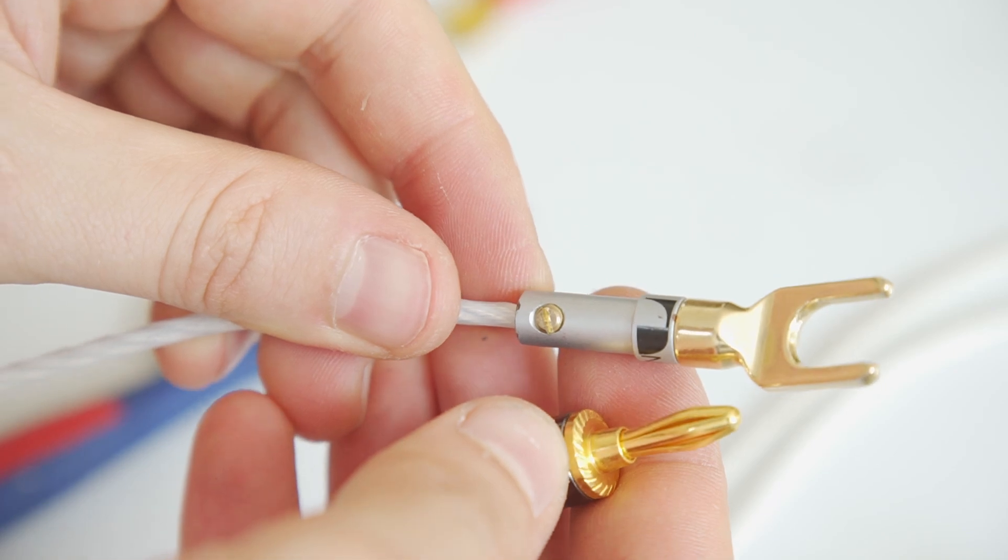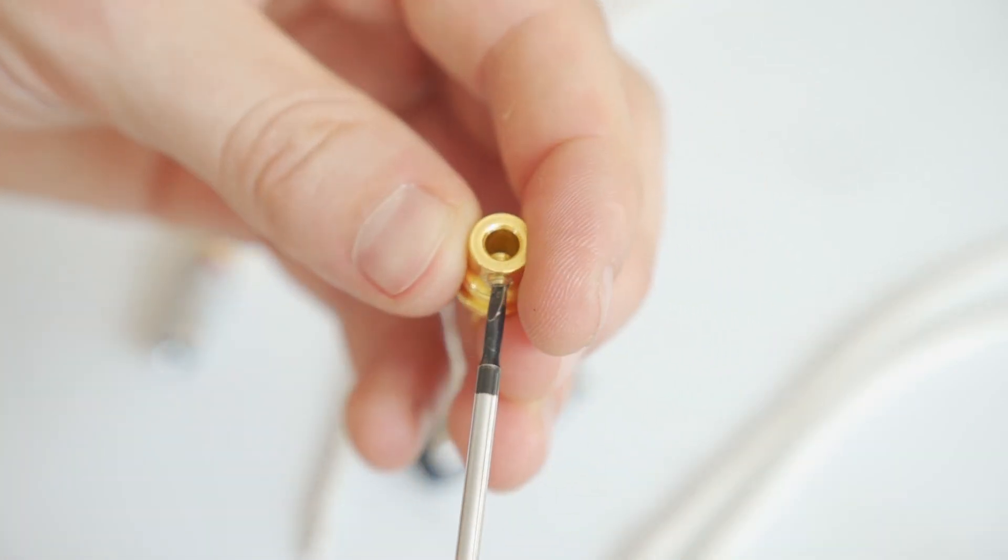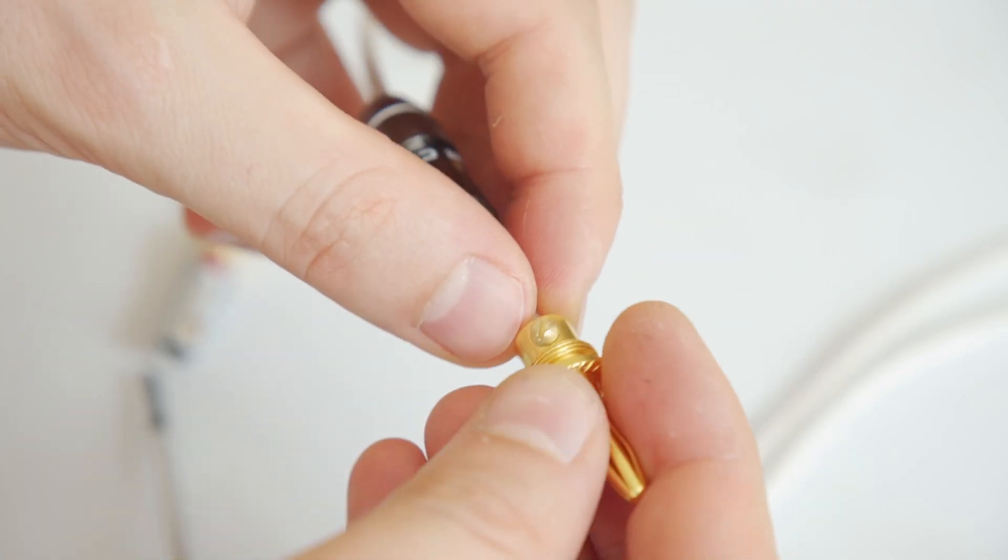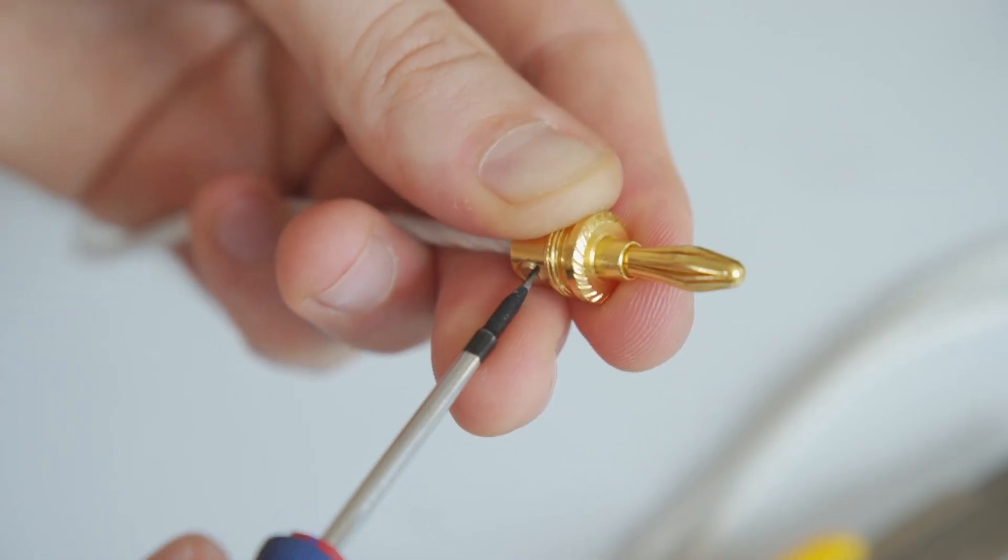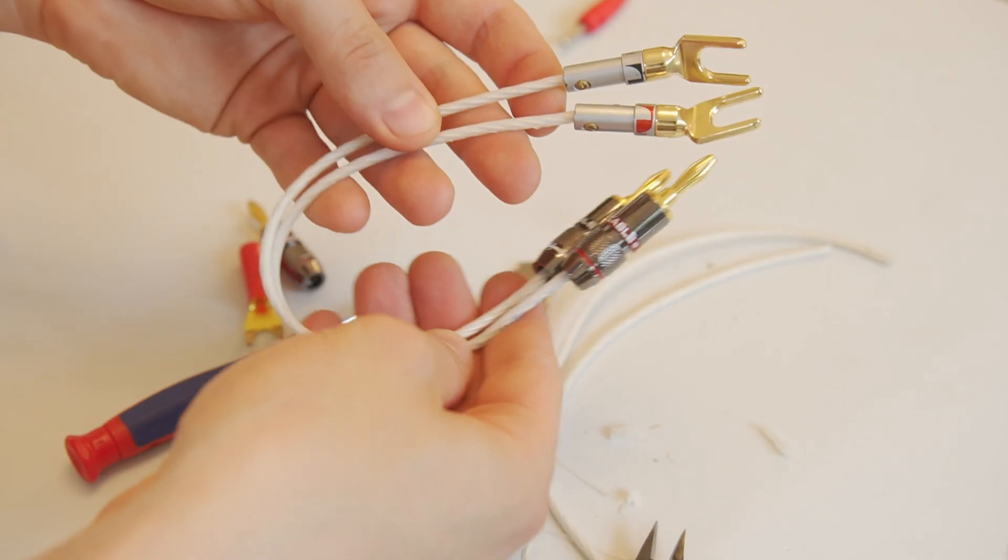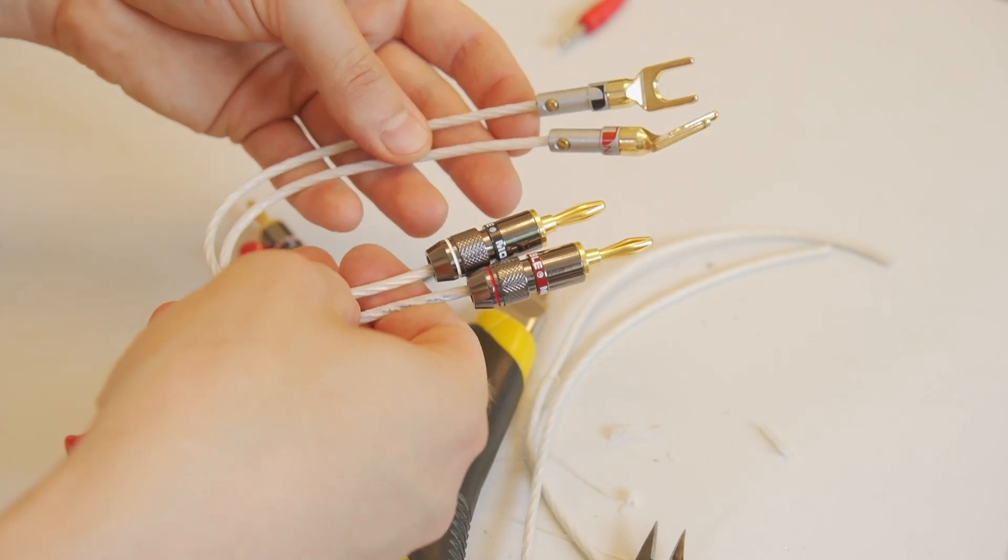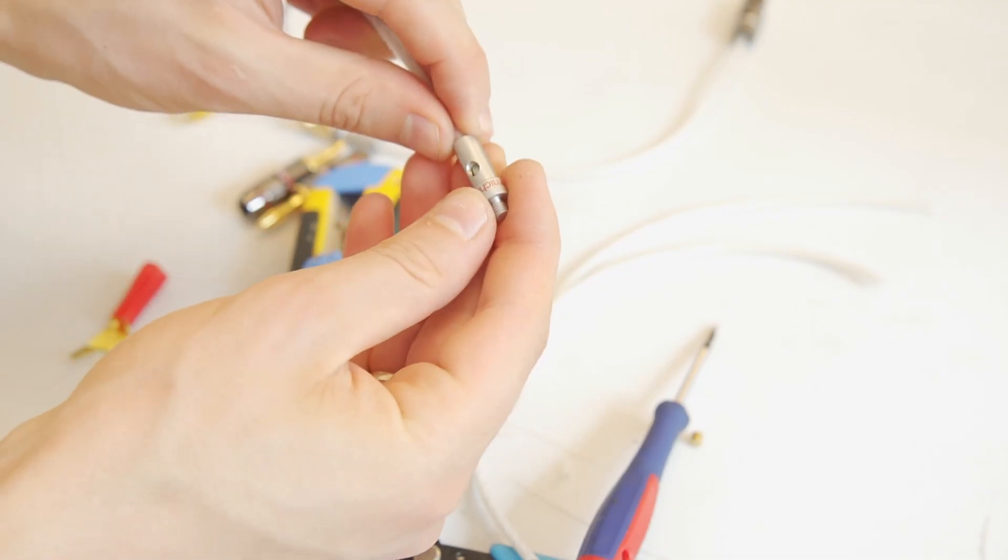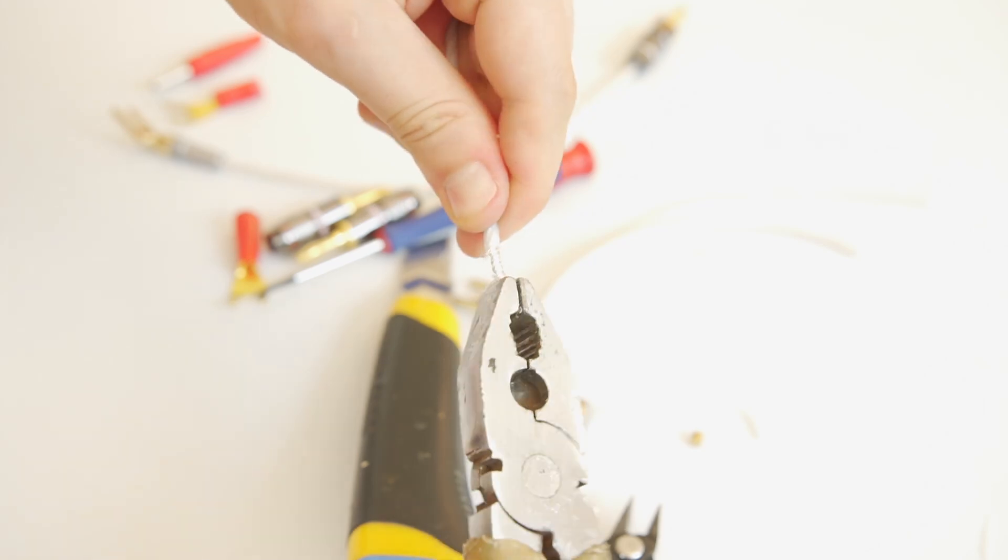Now repeat the same process for the other end. Unscrew the connector, check how much wire to strip, twist the wire, and screw it in tightly. Once done, check the color and make sure red is on both ends, and same for black. Repeat the same steps for the rest of the wires until all jumper cables are finished.